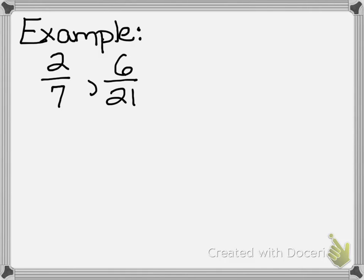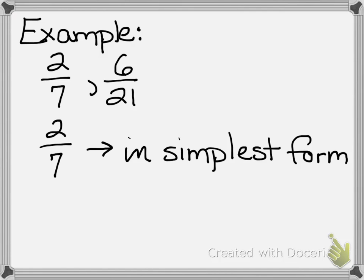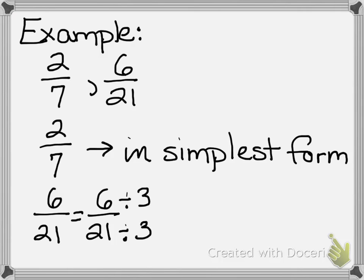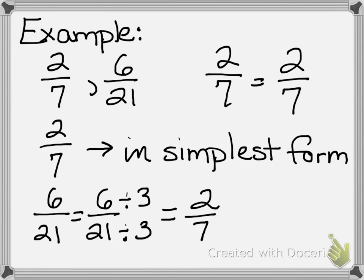Let's look at a couple of examples. In our first example: two-sevenths and six-twenty-firsts — are these proportional? Our first fraction, two-sevenths, is already in simplest form, we can't reduce it. For six-twenty-firsts, if I divide by three, I get two on top and seven on the bottom, which is two-sevenths. So two-sevenths equals two-sevenths — yes, they are proportional.